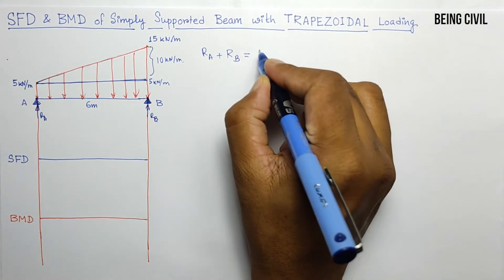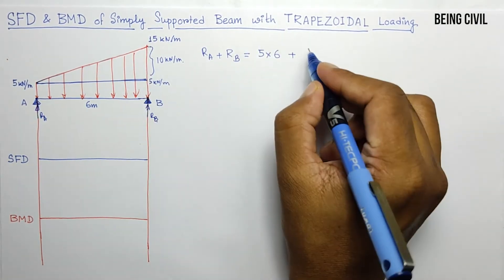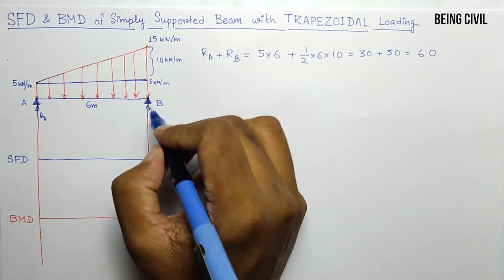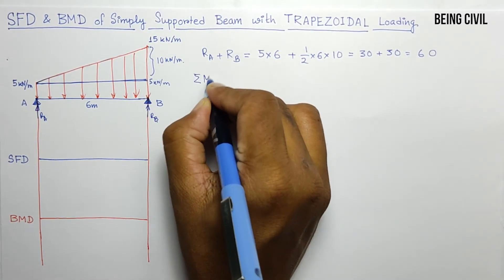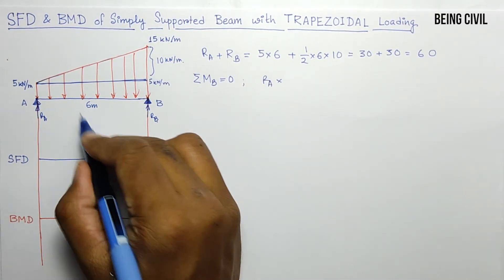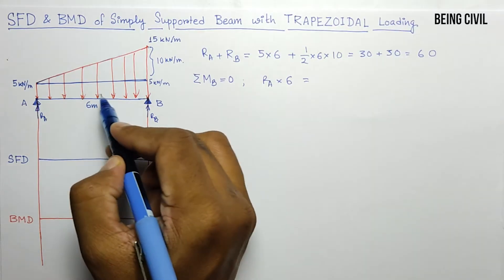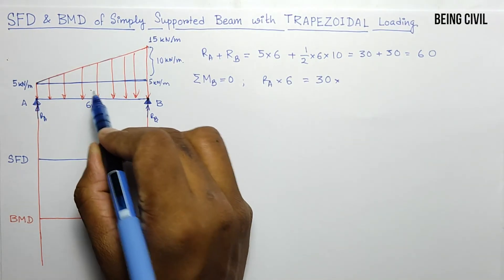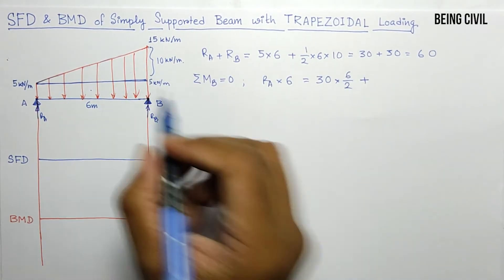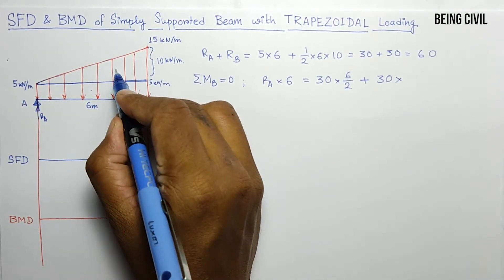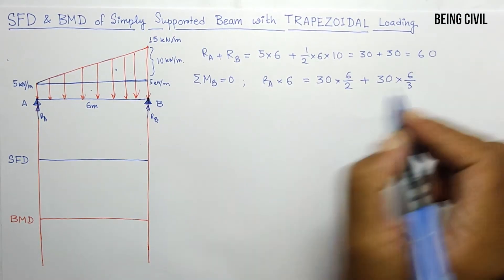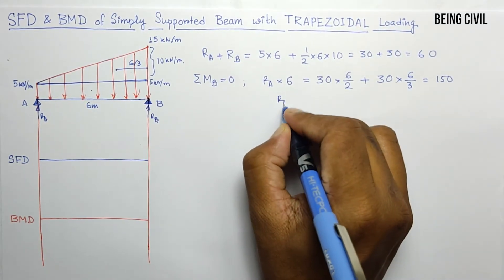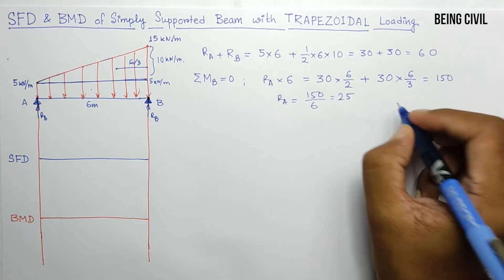The area of the rectangle is 5 × 6 = 30, plus the area of the triangle, which is ½ × base × height, giving 30. So Ra + Rb = 60. Taking moment about point B: Ra × 6 = 30 × (6/2) + 30 × (6/3), which gives Ra × 6 = 90 + 60 = 150. So Ra = 25 kN.